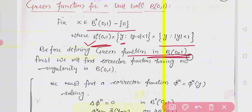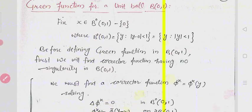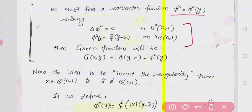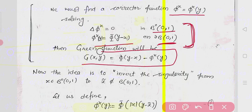The idea is to find a corrector function φ(x, y) which has no singularity in the unit ball. This corrector function satisfies: Δφˣ = 0 in the open unit ball, and φˣ(y) = Φ(y − x) on the boundary of the unit ball. Once we find φ(x, y), the Green's function is defined as G = Φ(y − x) minus the corrector function φˣ(y).